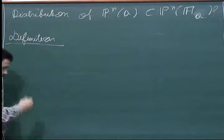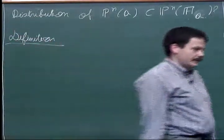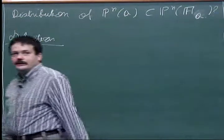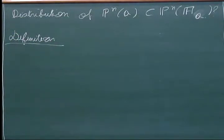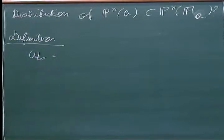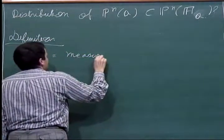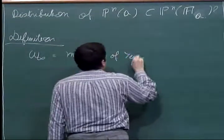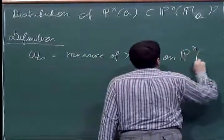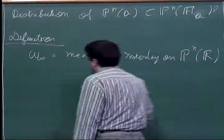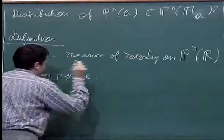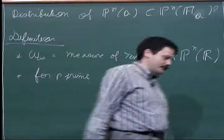We have already seen a measure ω yesterday, which was over P^n(R), but today I shall denote it by ω_∞ to stress that it is for P^n(R). So ω_∞ is the measure of yesterday on P^n(R). And then, for a prime p, I'm going to define a measure ω_p on P^n(Q_p).